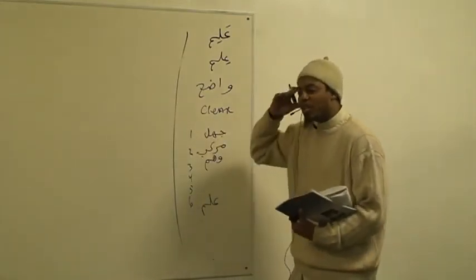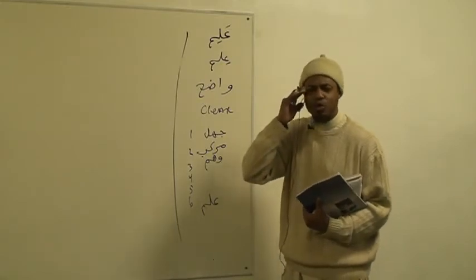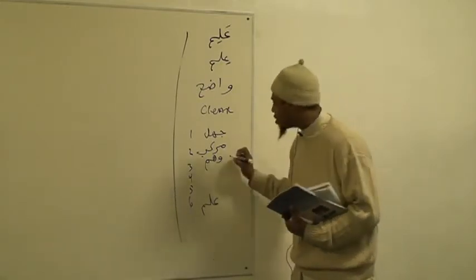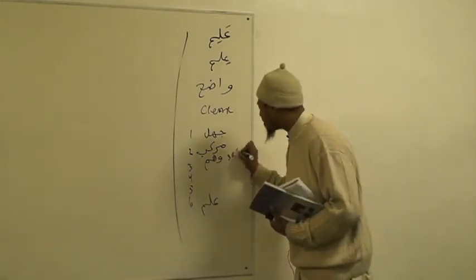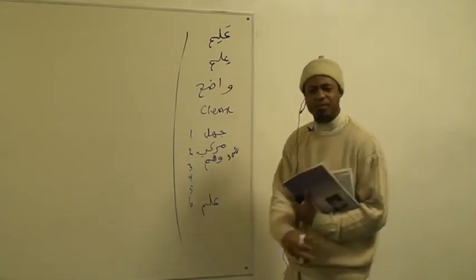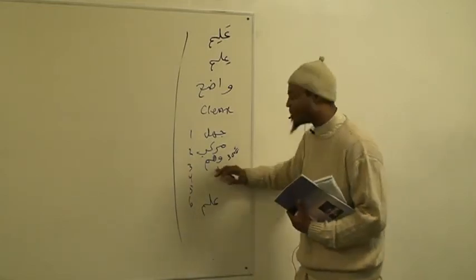Waham is when you understand a thing but you're still confused about it — it's like to know something 30% of it and 70% you're still confused. That's that type of knowledge.